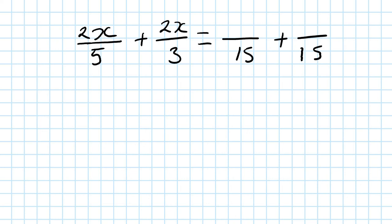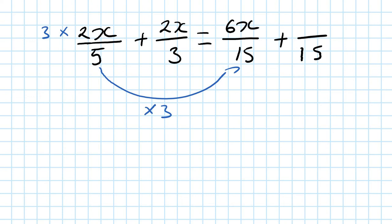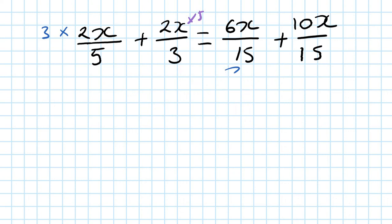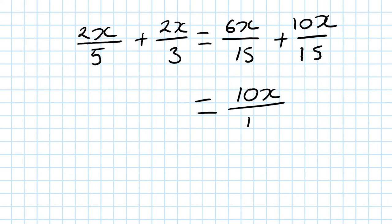From 5 to 15 is times 3, so the top must also be times 3: 3 times 2x is 6x. From 3 to 15 is times 5, so the top must be times 5: 5 times 2x is 10x. Now just add them up: 6x plus 10x is 16x, so the answer is 16x over 15.